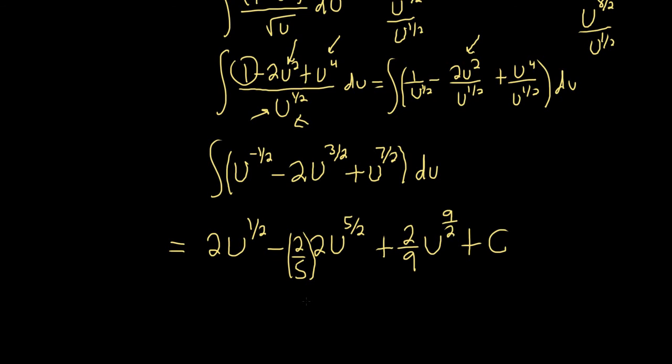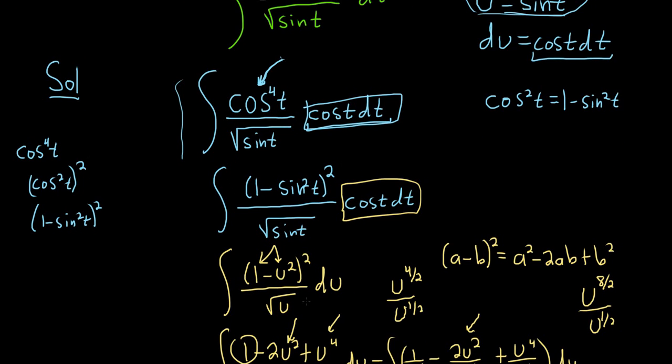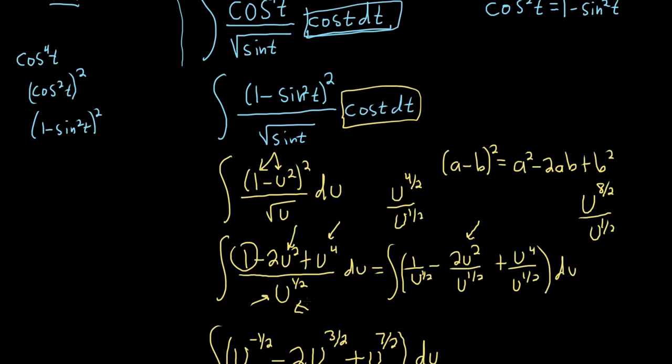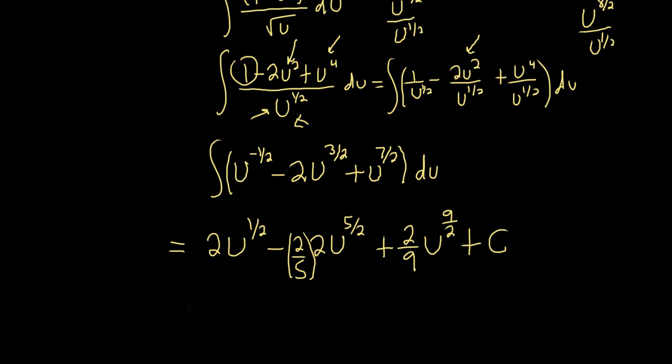Wow, I already forgot what u was. I'm going to go back up and look. So u was sine t. Okay, so all we do now is replace all of the u's with sines. This is 2.